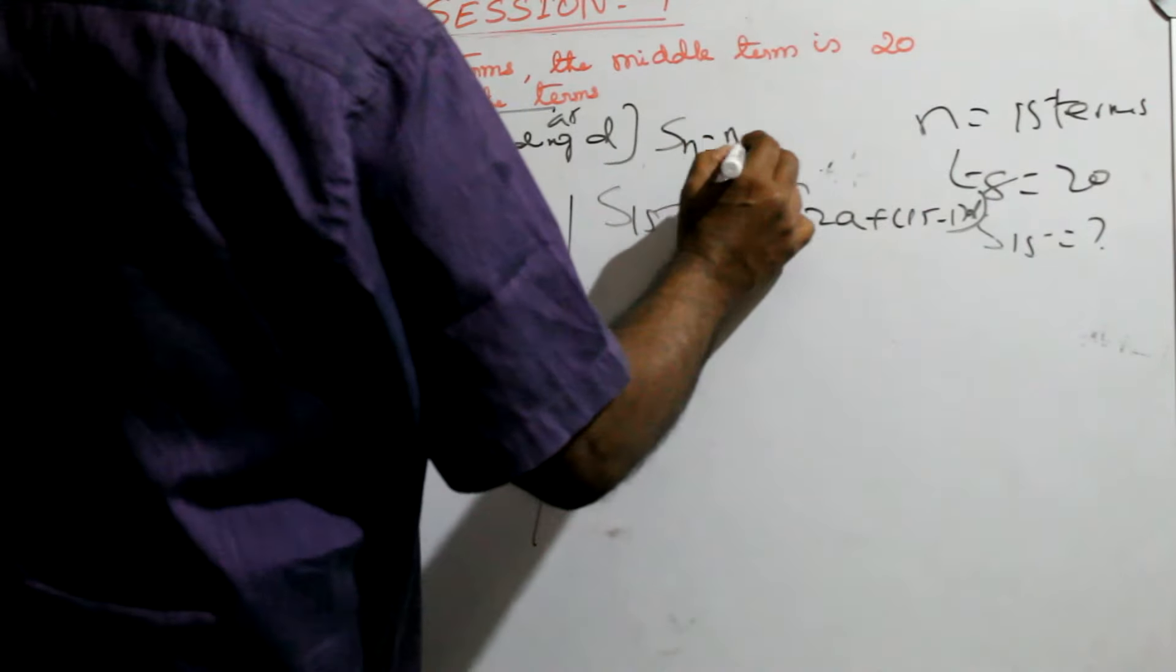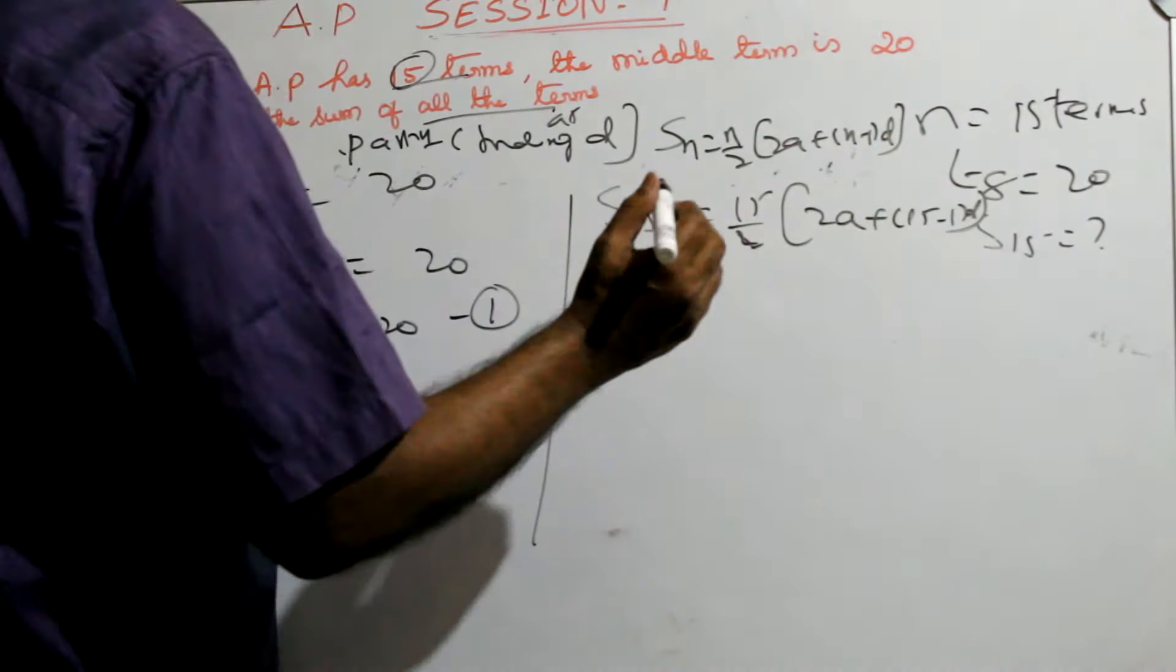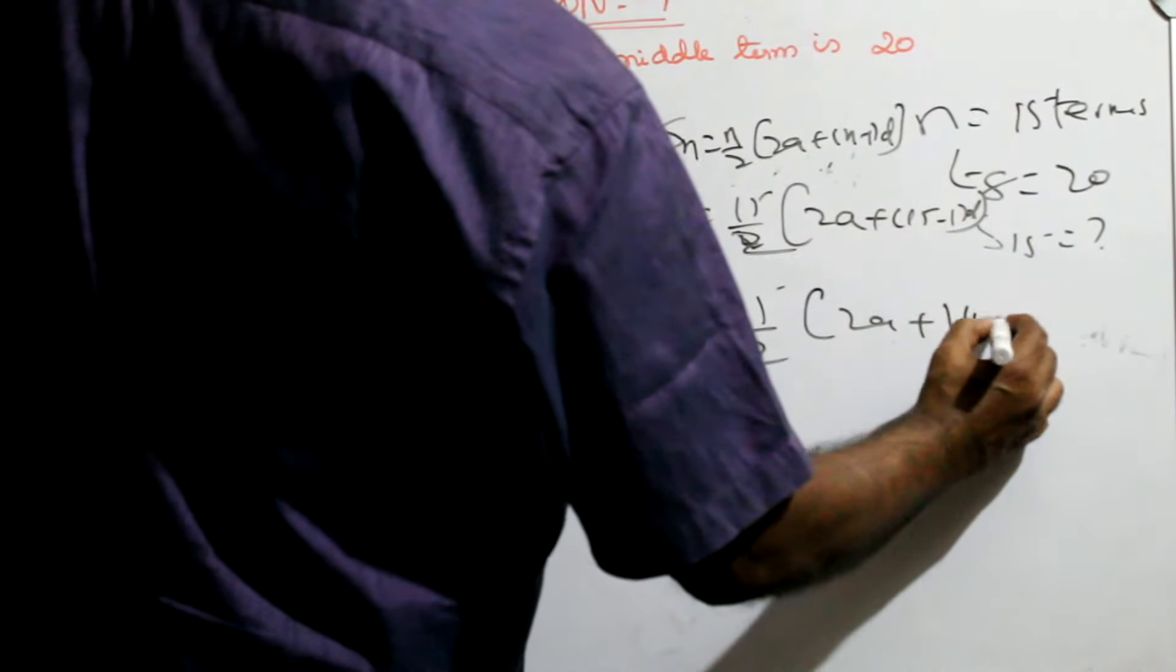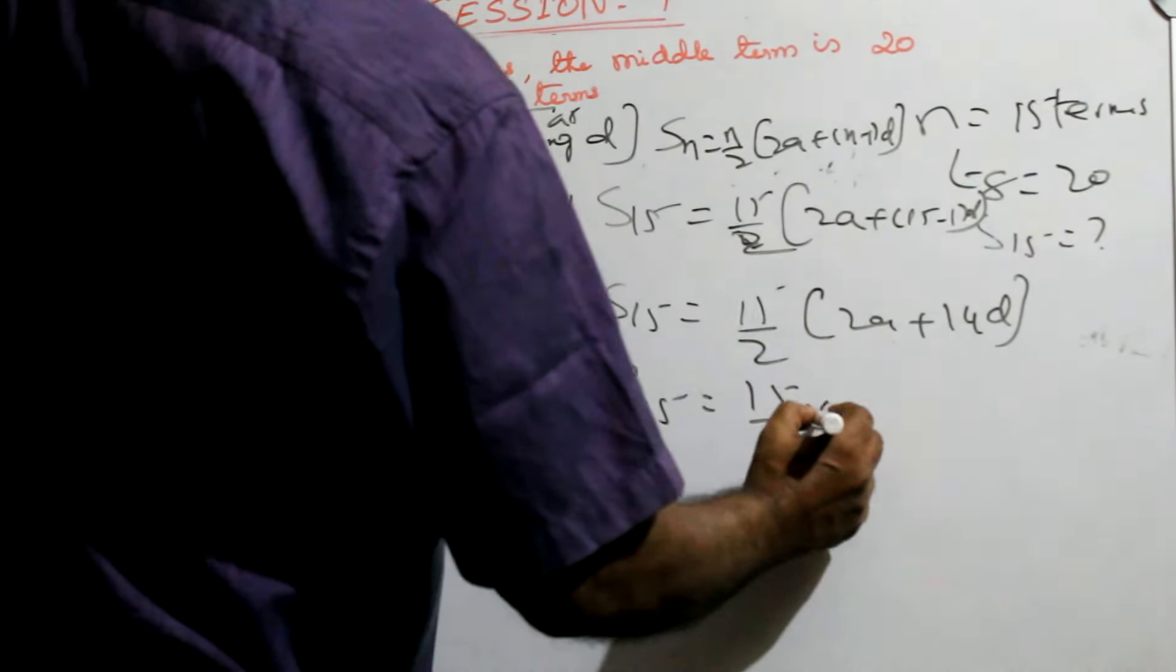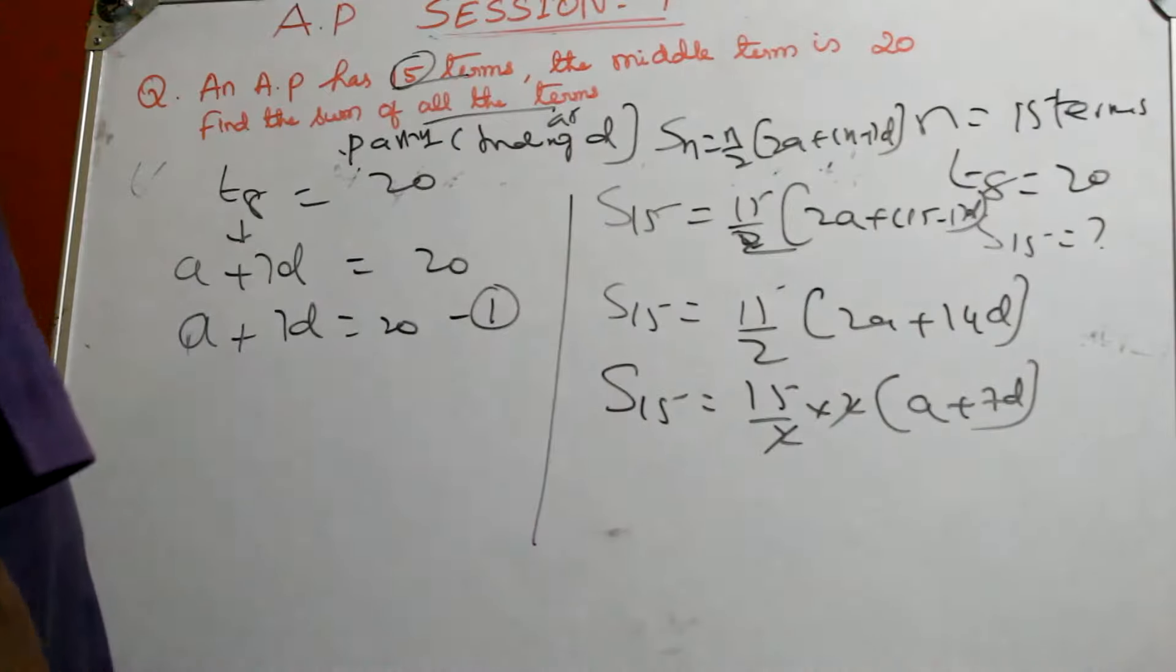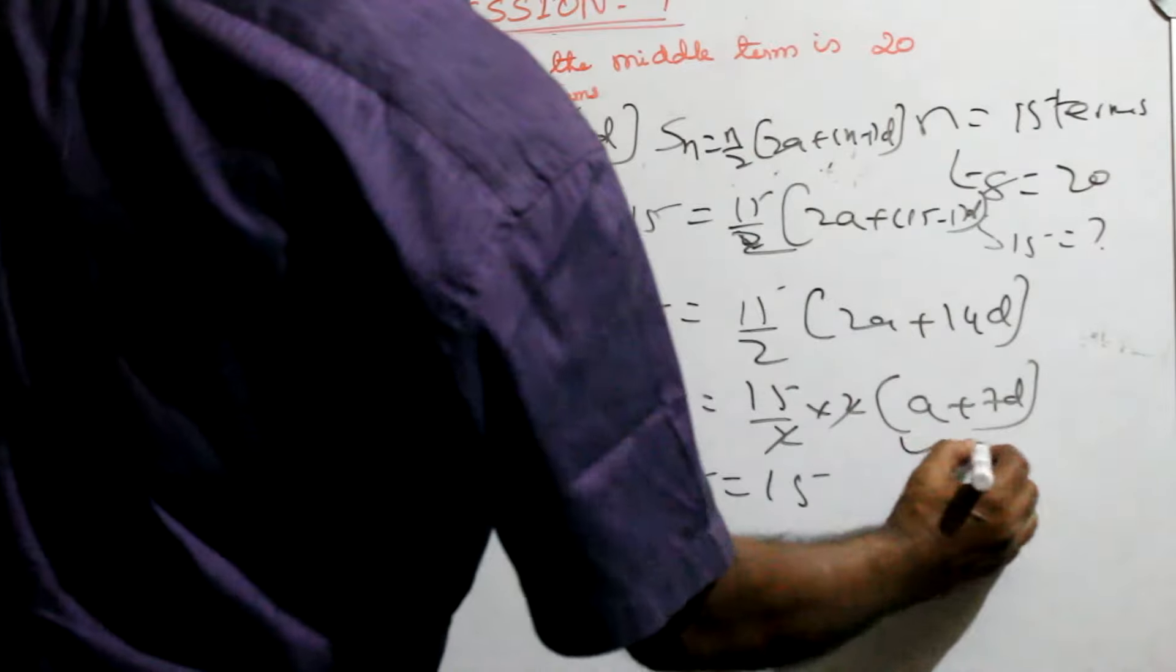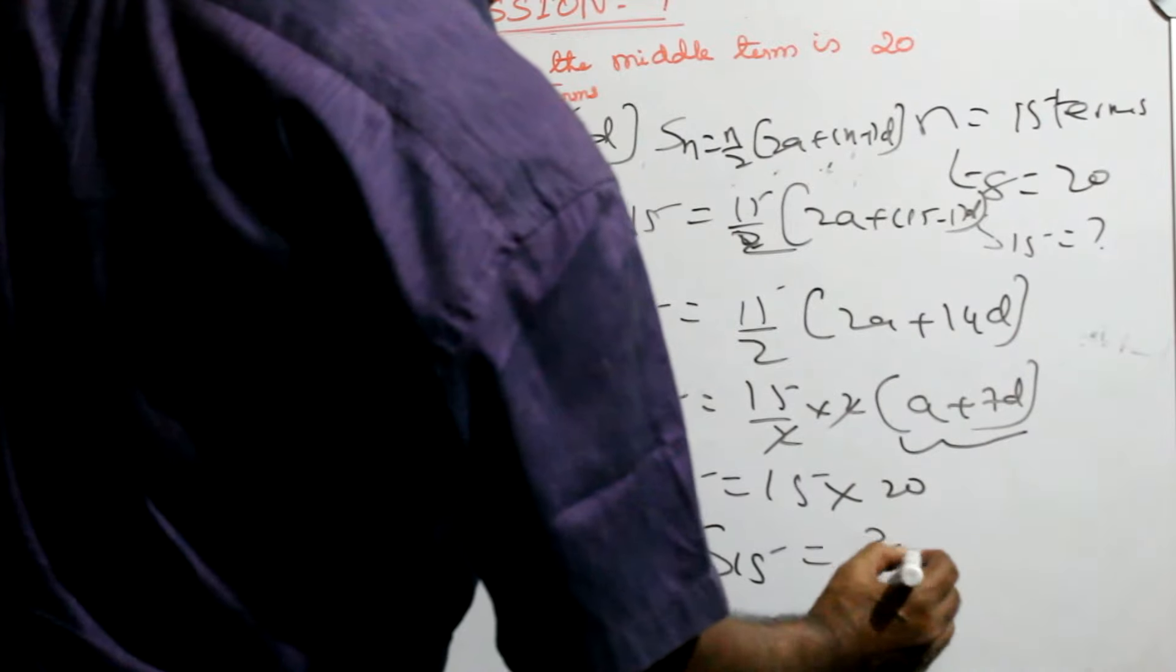Use the formula: Sn is equal to n by 2 into 2A, n minus 1 into D. So S15 is nothing but 15 by 2, 2A, 14D. You can take the 2 out. S15 equal to 15 by 2 into 2 into A plus 7D. So 2, 2 gets cancelled. So A plus 7D is nothing but 20. So S15 is equal to 15 into, this you can substitute 20 there. So S15 is nothing but 300. It's a very beautiful sum.